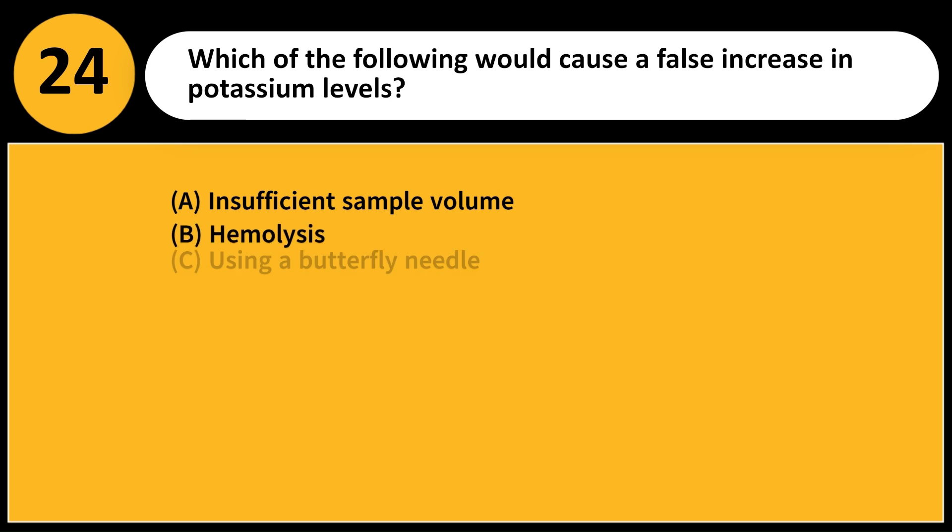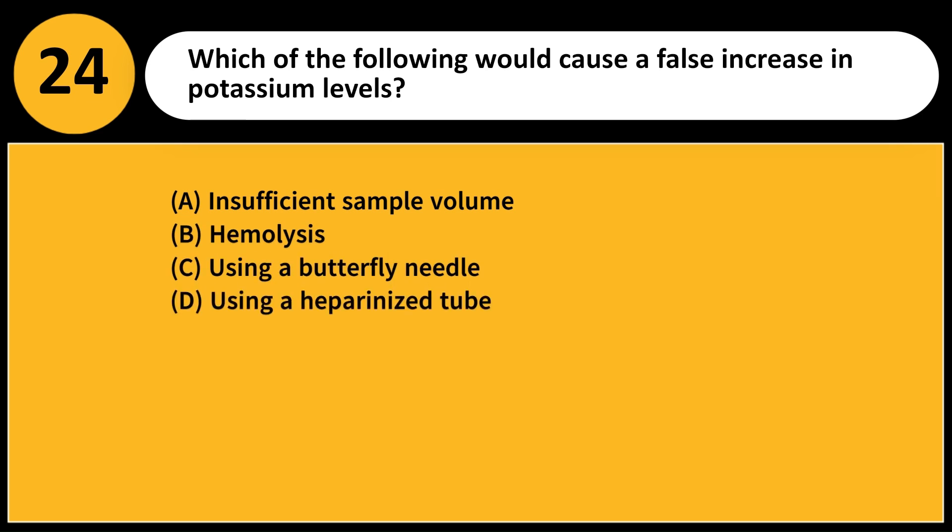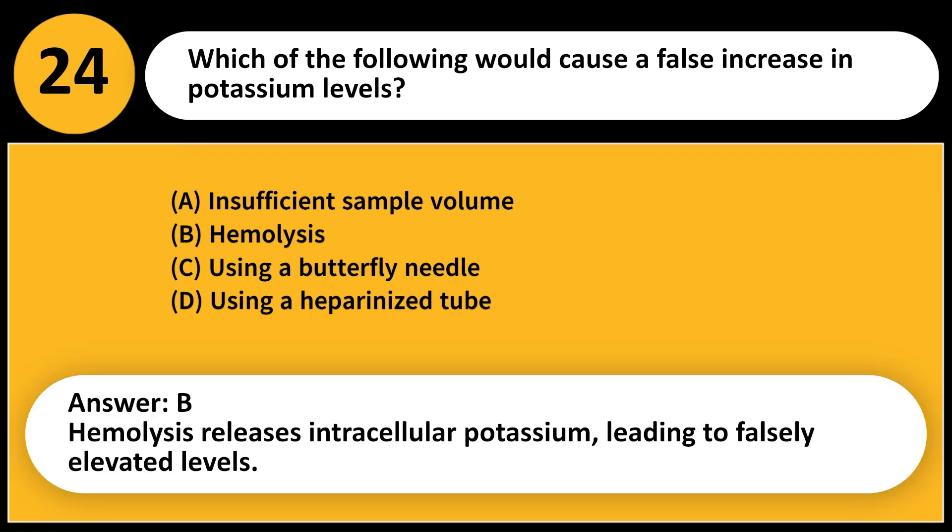Which of the following would cause a false increase in potassium levels? A. Insufficient sample volume. B. Hemolysis. C. Using a butterfly needle. D. Using a heparinized tube. Answer: B. Hemolysis releases intracellular potassium, leading to falsely elevated levels.